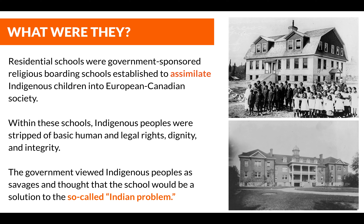Residential schools were government-sponsored religious boarding schools established to assimilate Indigenous children into European Canadian society. Within these schools, Indigenous peoples were stripped of basic human and legal rights, dignity and integrity. The government viewed Indigenous peoples as savages and thought that the school would be a solution to the so-called Indian problem.